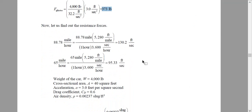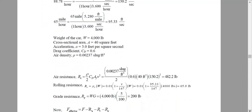We convert speed to feet per second because the equations use ft/s, not mph. The net speed of the car with respect to the wind is 88.78 mph, and the car speed alone is also converted to ft/s. Then we calculate air resistance using the formula: rho times drag coefficient times projected area times net speed squared. Rolling resistance is mu_r times W, where mu_r depends on vehicle velocity only — wind velocity is not considered in rolling resistance.